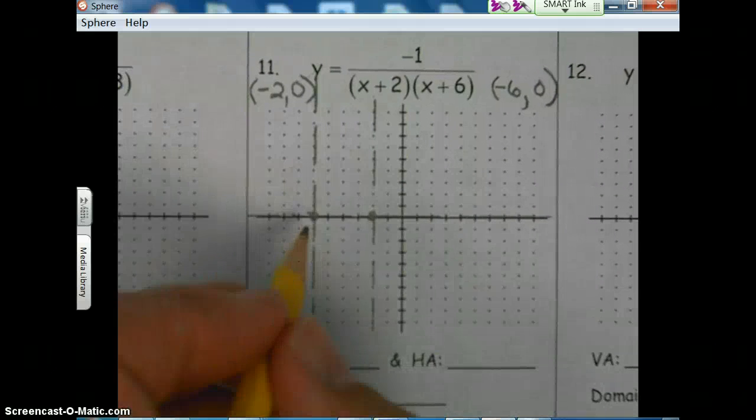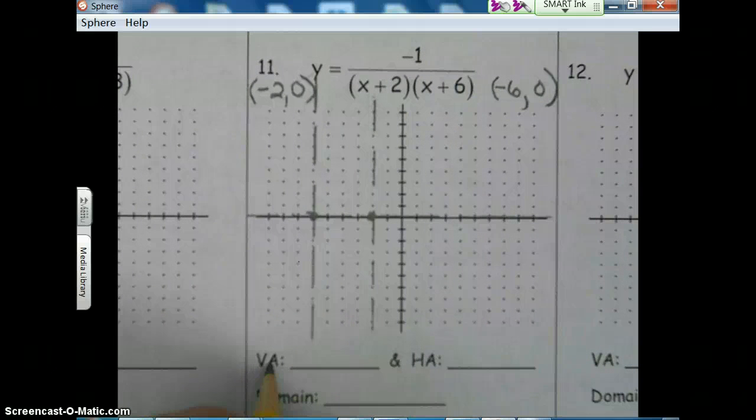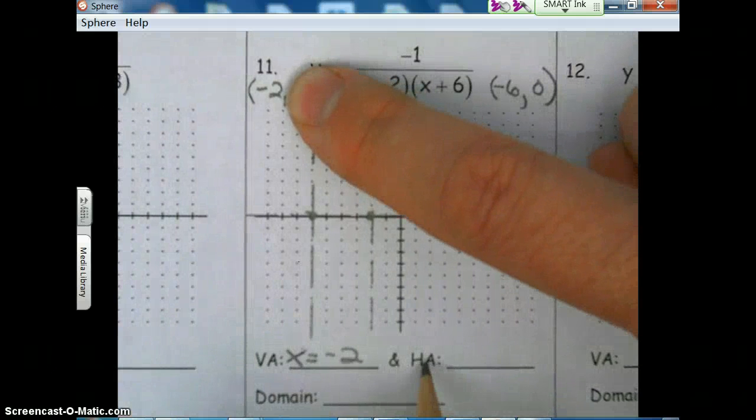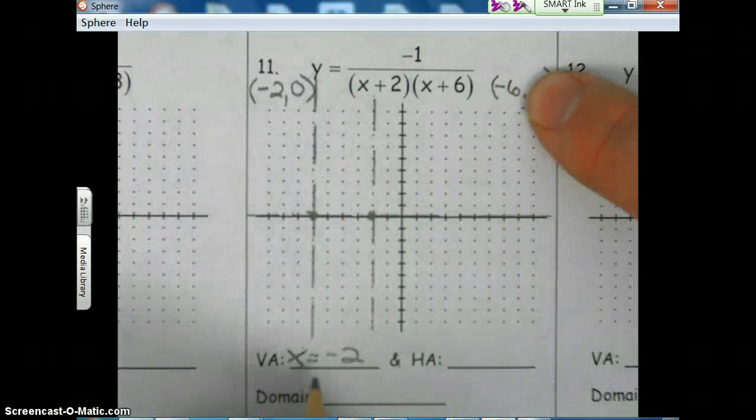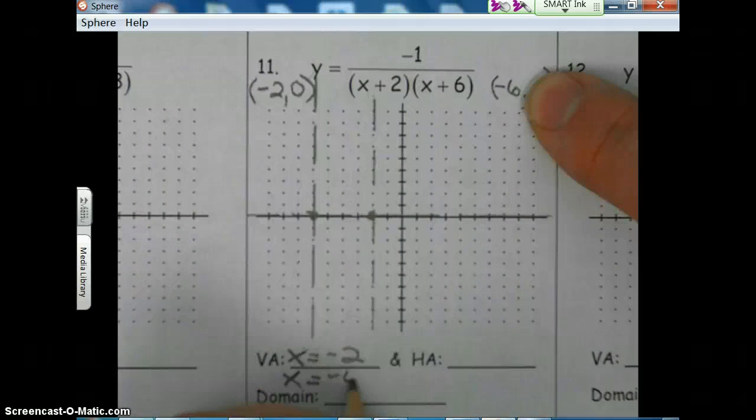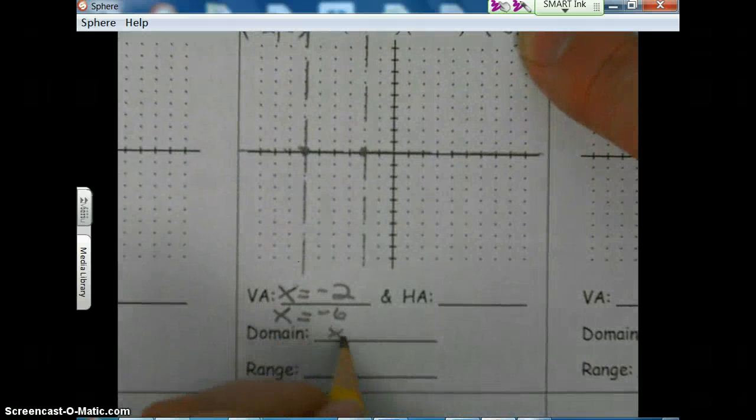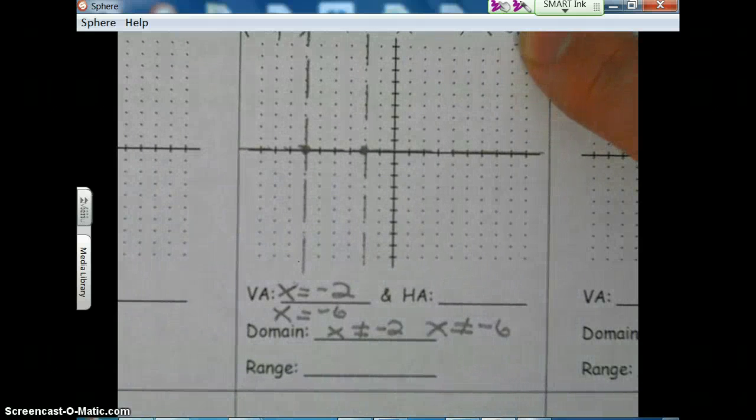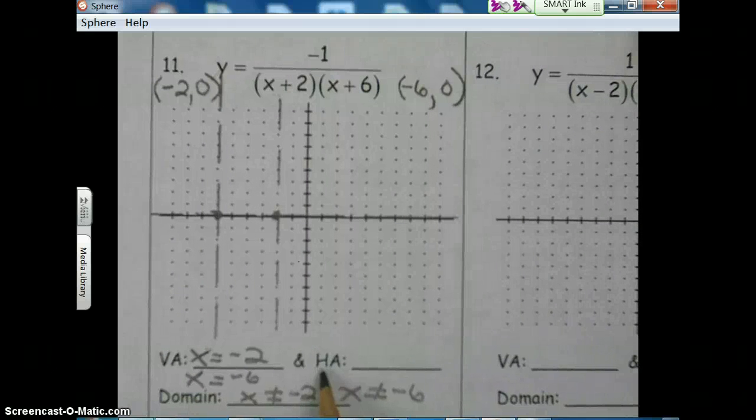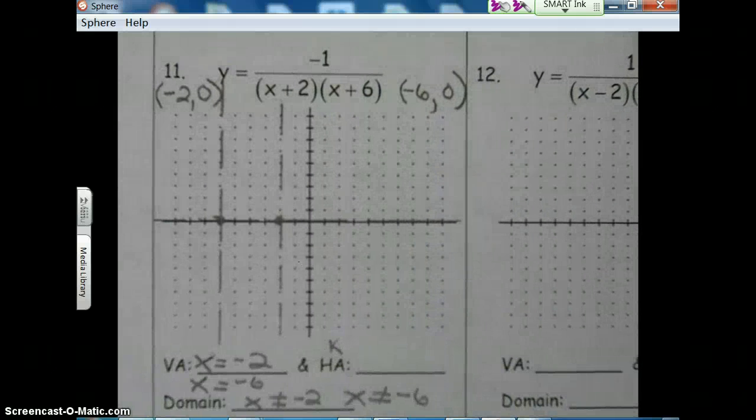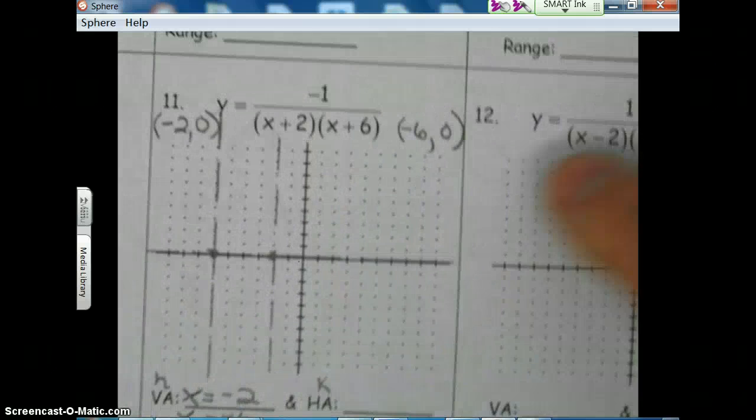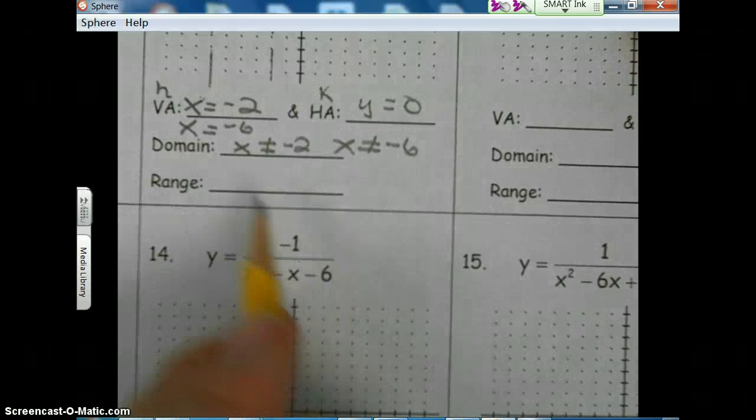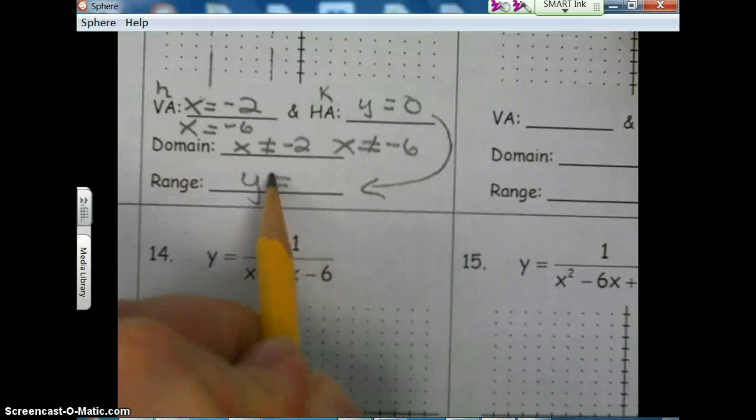So remember, vertical asymptote is associated with h. So our first h is negative two, so x equals negative two. Our second vertical asymptote is associated with the other h, x equals negative six. Let's get the domain out of the way. x cannot be negative two, x cannot be negative six. Now, horizontal, remember, that's associated with the k value. So since our k value is the same, y equals zero. Going down here to range, y cannot be zero.